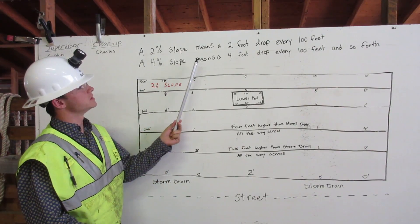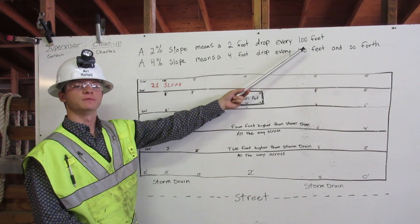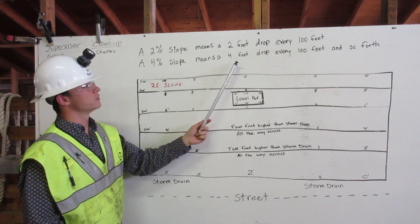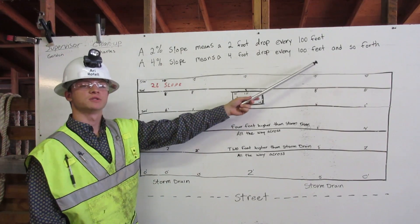A 2% slope means a 2 foot drop every 100 feet. A 4% slope means a 4 foot drop every 100 feet and so forth.